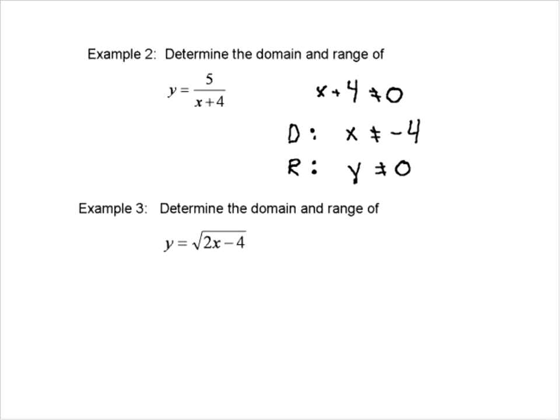Let's look at another example. We're going to look at a radical — a square root. If you remember from square roots, what's the one thing that we cannot have? You can't take the square root of a negative number. So when we're trying to determine the domain, we have to take into account that the value underneath the radical — the discriminant — cannot be smaller than 0.